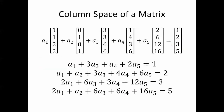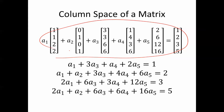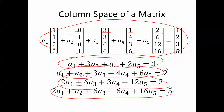This is what I had on the previous page. Notice that if you expand this out — for instance, if you look at the first row, you've got A1 times 1, A2 times 0, A3 times 3, A4 times 1, A5 times 2, equals 1 — and that's this equation. You also get these other equations. So basically this matrix equation can be rewritten like this.